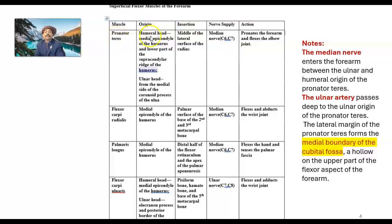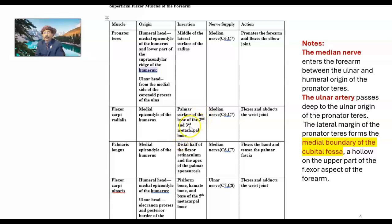From the table: pronator teres inserts into the middle of the lateral surface of the radius. Innervation: median nerve. Action: pronates the forearm and flexes the elbow joint, because it crosses that joint. Flexor carpi radialis has common origin from the medial epicondyle of the humerus and inserts into the base of the second — possibly also third — metacarpal bone. Action: flexes and abducts the wrist joint. Palmaris longus — again common origin from the medial epicondyle.